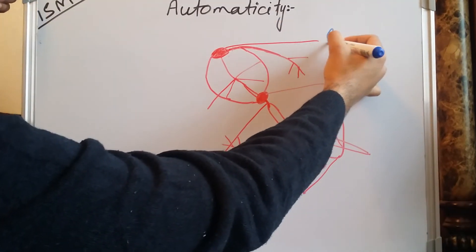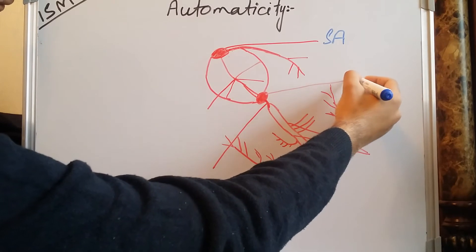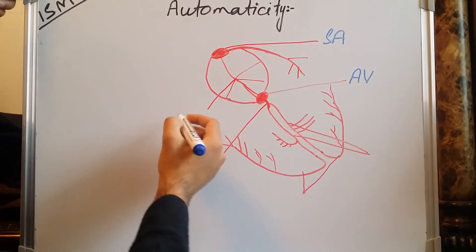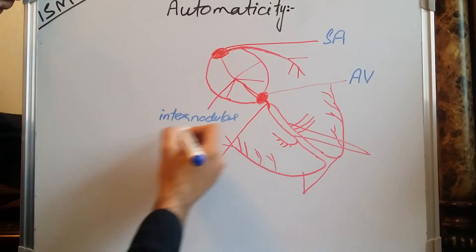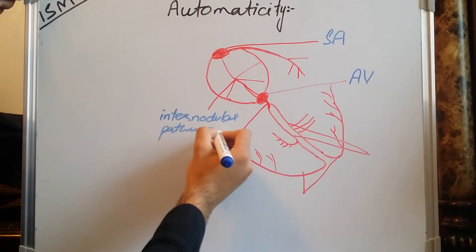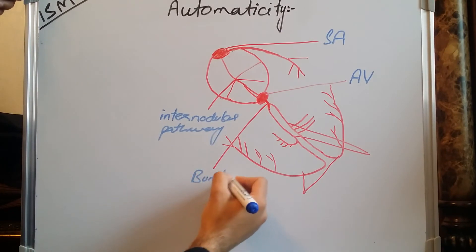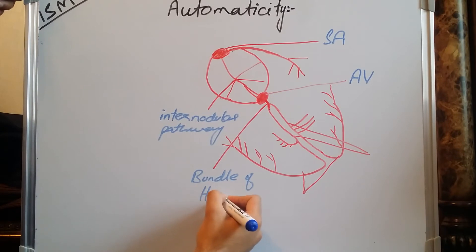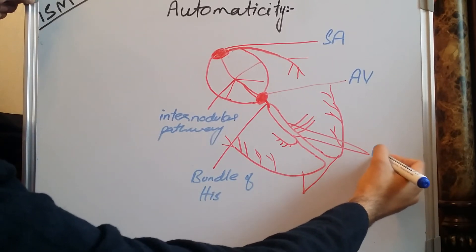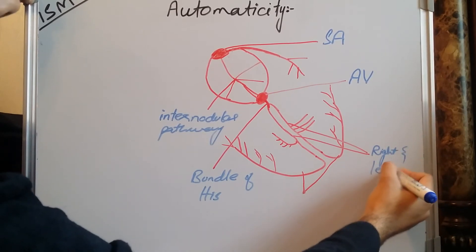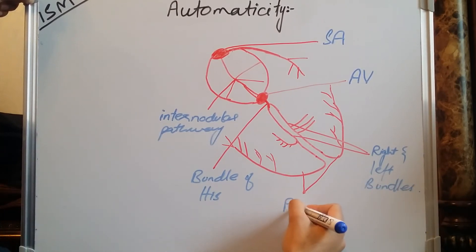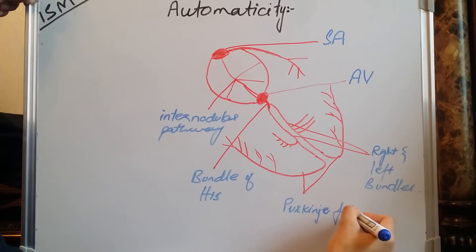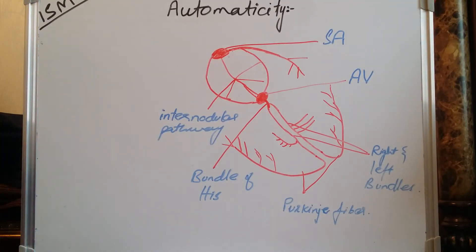On the diagram, we can identify the following structures: the sinoatrial node, the atrioventricular node, the inter-nodular pathway, the bundle of His, the right and left bundle branches, and the Purkinje fibers.